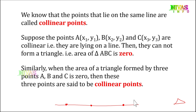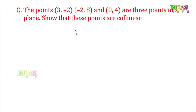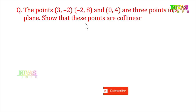So if we have an example, we will see it. It will be easy to see it. I have an example: the points (3, -2), (-2, 8), and (0, 4) are three points in a plane. Show that these points are collinear. We have three points with coordinate values. If they are collinear, we will verify it. If we find the area of the triangle and the value is zero, they are collinear.